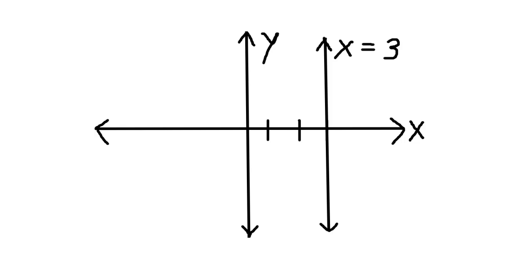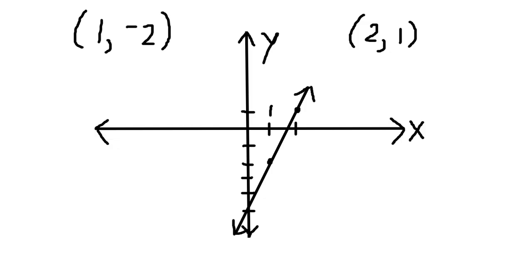In order to make a non-vertical, non-horizontal line, we need to describe the relationship between x and y. This relationship can be described in a number of different ways. Once you've described enough information that we know for certain what the line looks like, we can graph it. For example, if you told me any two points on the line, then we know exactly what the line looks like. If we know that (1, -2) and (2, 1) are both points on the same line, then we can graph this equation by plotting the two points and drawing the line between them.